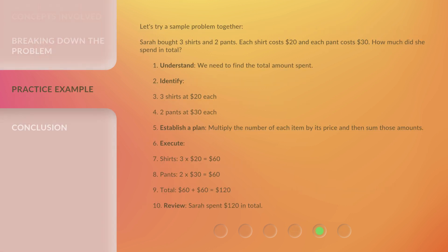Let's try a sample problem together. Sarah bought three shirts and two pants. Each shirt costs $20 and each pant costs $30. How much did she spend in total? 1. Understand: we need to find the total amount spent. 2. Identify: 3 shirts at $20 each, 2 pants at $30 each. 3. Establish a plan: Multiply the number of each item by its price and then sum those amounts.